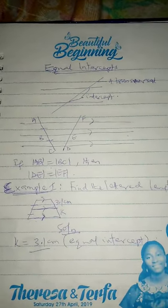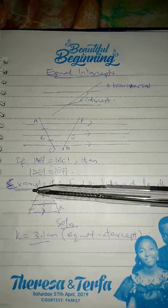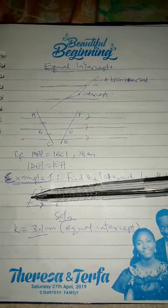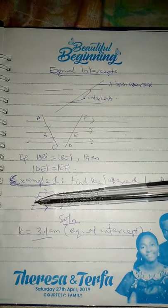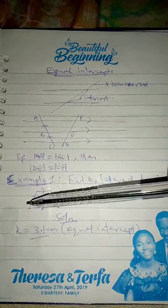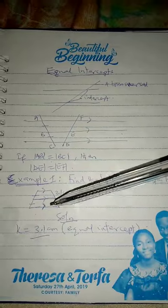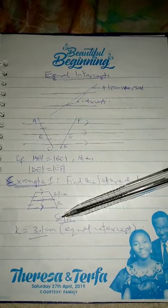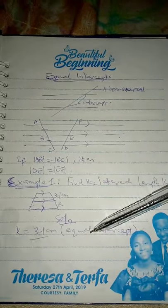Now, Example 1: find the unknown length K. Look at your diagram. See the three parallel lines, then here are the two transversals. For this first transversal, you can see the markings showing that this intercept is equal to this intercept. As I told you, if three or more parallel lines cut off equal intercepts on a particular transversal, then those parallel lines will also cut off equal intercepts on any other transversal. Therefore, K is 3.1 cm. Reason: equal intercepts.